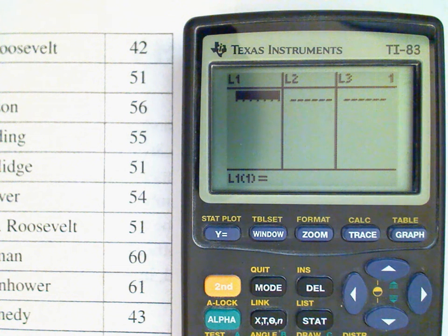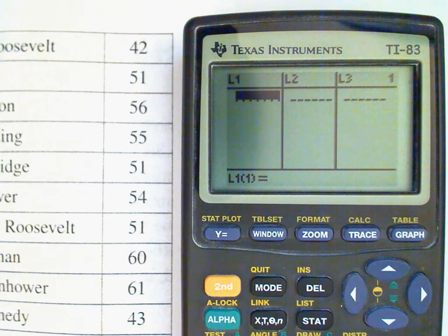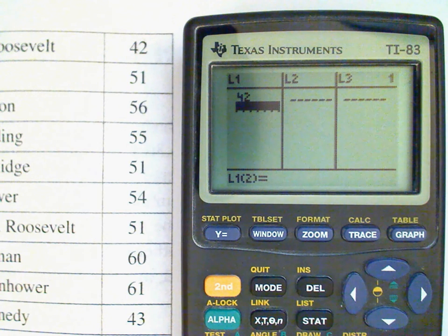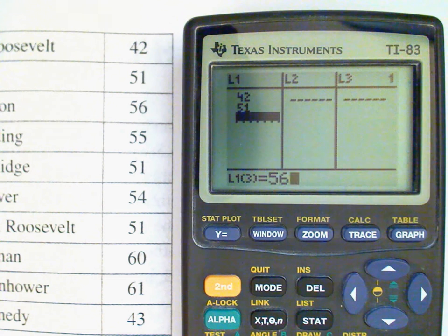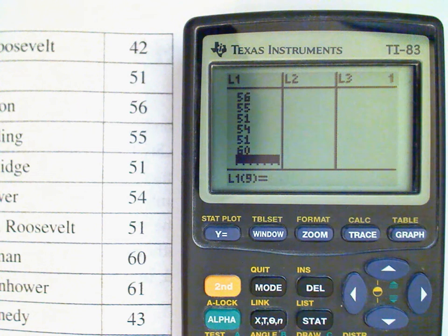So I'm just going to go ahead and enter my data now straight from the original table: 42, 51, 56, 55, 51, 54, 51, 60, 61.